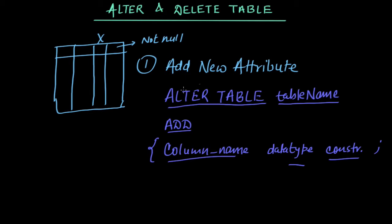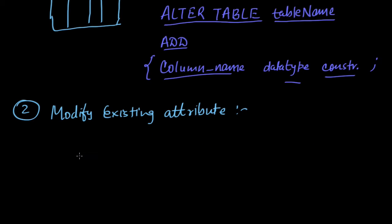The next case is modifying an existing attribute. Let's say for the employee table there is an attribute called salary, and I want to modify it to be NOT NULL — initially it was not specified but now salary should not be null. To modify an existing attribute, we change ADD to MODIFY in the command.